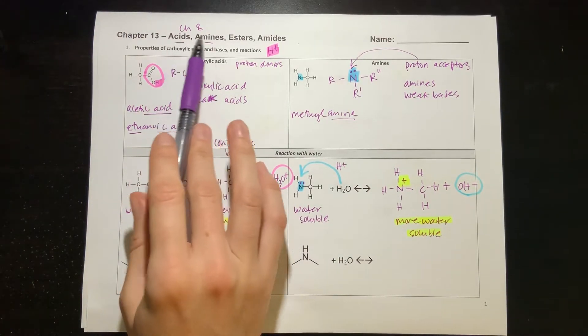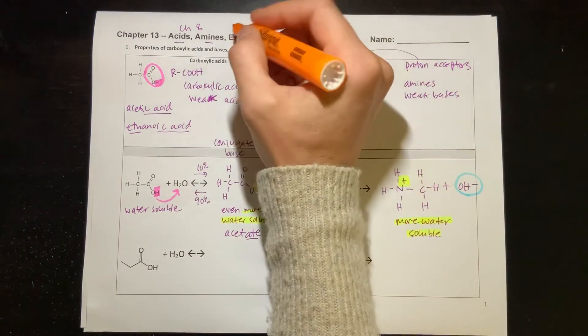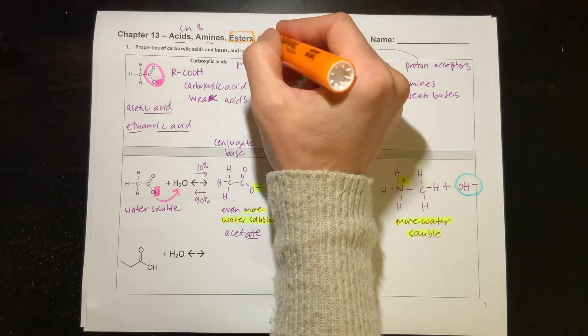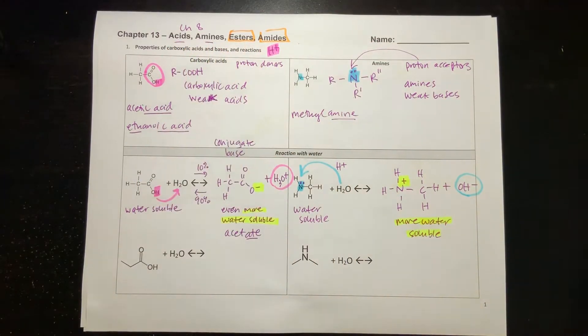So far we've looked at acids and amines, and now we're going to add two new functional groups that I'm going to use orange boxes for: esters and amides. These are closely related to acids and amines, so that's going to be the connection here.